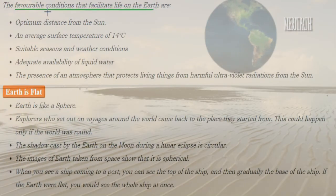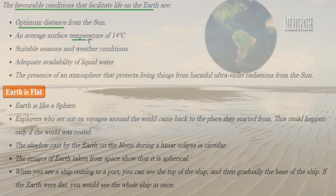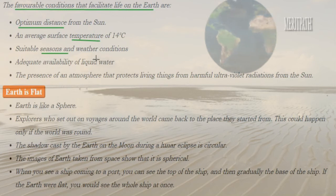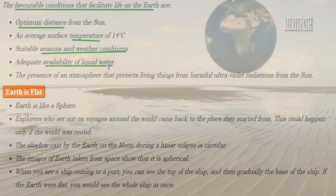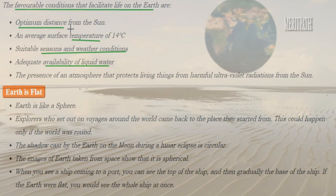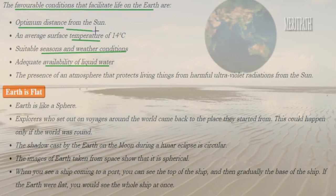There are favorable conditions which facilitate life on the surface of the Earth. Earth is at an optimum distance from the sun, and the temperature on the surface of the Earth is at an average of 14 degrees centigrade. There are different seasons and weathers on the Earth. Water, atmosphere, and air are all available, and this air protects us from the harmful UV rays of the sun. That is why life is able to continue on the surface of planet Earth.